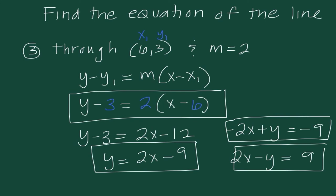The only time the form would matter is on a multiple-choice test where all answers are in slope-intercept form — then you'd need to convert. But whether you use point-slope form and then manipulate it, or go straight to slope-intercept form, either way is fine.